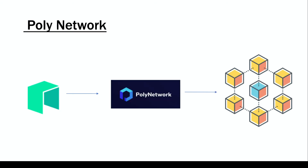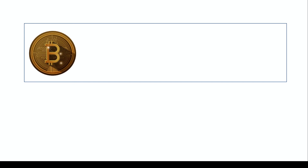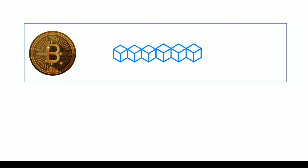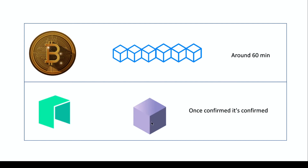The fifth difference is that other blockchains have multi-block finality, while NEO blockchain has one-block finality. For example, on Bitcoin, a transaction requires six block confirmations — about one hour of waiting. In the case of NEO, once your transaction is confirmed, it is completely confirmed. You do not need to wait for multiple block confirmations, which saves a lot of time.